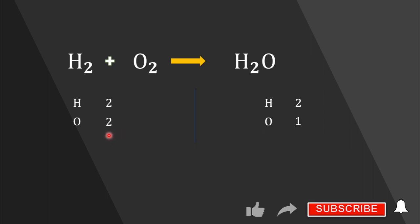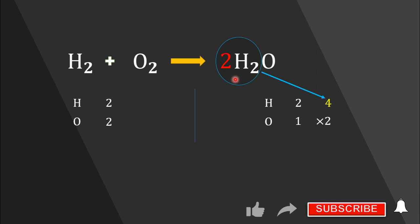There are two oxygen atoms on the reactant side and one oxygen atom on the product side. Therefore, to balance our chemical equation we have to add a coefficient. Remember, you can never change the subscript. We can add coefficient two in front of the H₂O molecule to balance oxygen. Note that this coefficient changes not only the number of oxygen atoms but also the number of hydrogen atoms. The total number of atoms of a particular element is obtained by multiplying the subscript by the coefficient. Thus to balance hydrogen, we should also add coefficient two in front of H₂ in the reactant side.